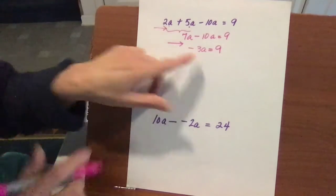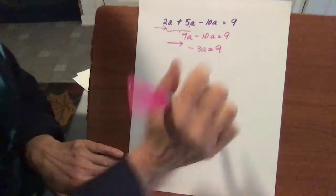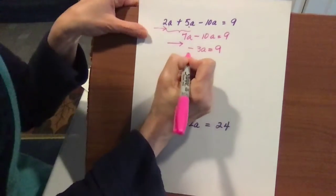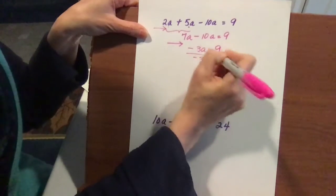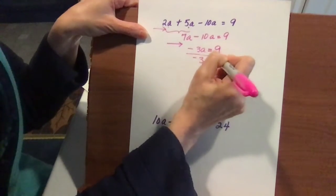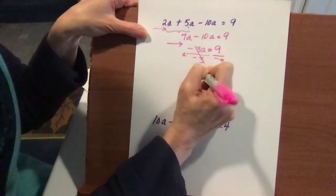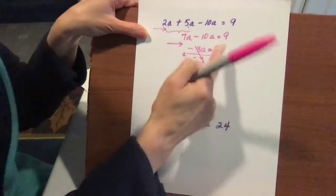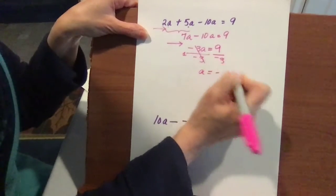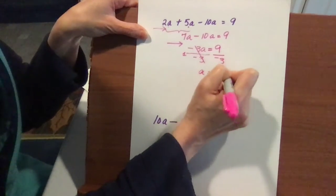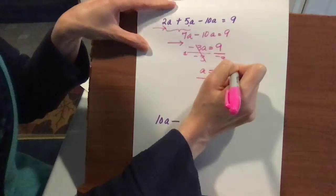We're at negative 3a equals 9. Divide by negative 3 on both sides — that gives 1a. A positive divided by a negative is a negative number, so 9 divided by negative 3 is negative 3. So a equals negative 3, and that is your answer.